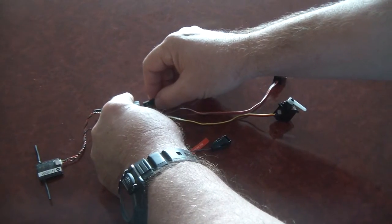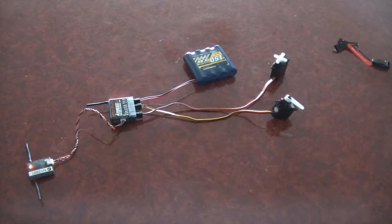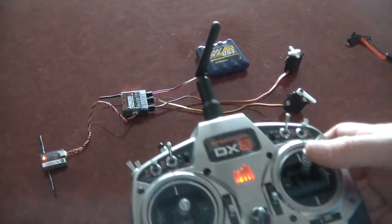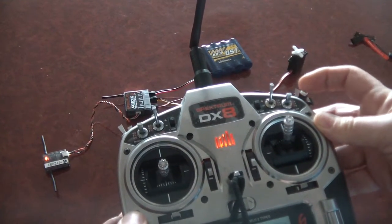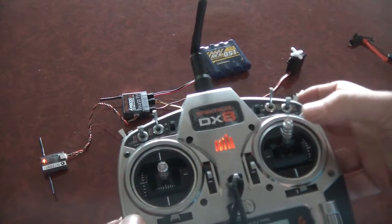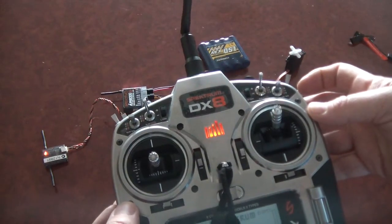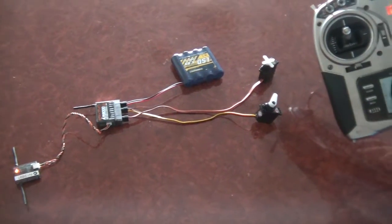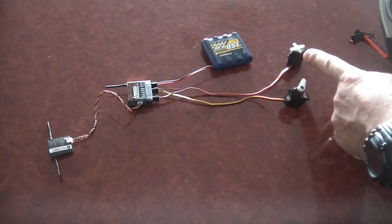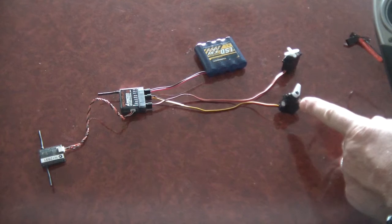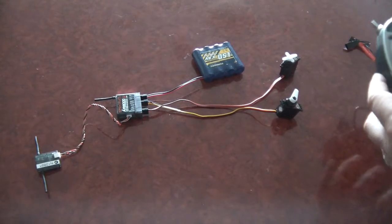Now this is where the AR8000 will only apply a failsafe position to the throttle. So you see I'm moving the throttle and now I'll move the switch. Okay, so I'm going to put full throttle and I'm going to put the switch in the forward position, which is different to where it was when I did the bind, and I'll turn off the radio. Okay, you'll see only the throttle moved. The gear servo, the servo on the gear channel, didn't move, so it's basically holding its last known position.